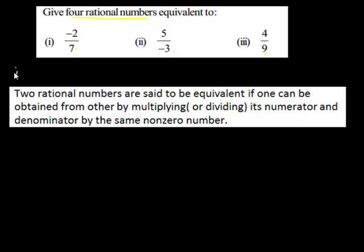First question is negative 2 upon 7. Before we start with the solution, let us see what are equivalent rational numbers. Two rational numbers are said to be equivalent if one rational number can be obtained from the other by multiplying or dividing both its numerator and the denominator by the same non-zero number.